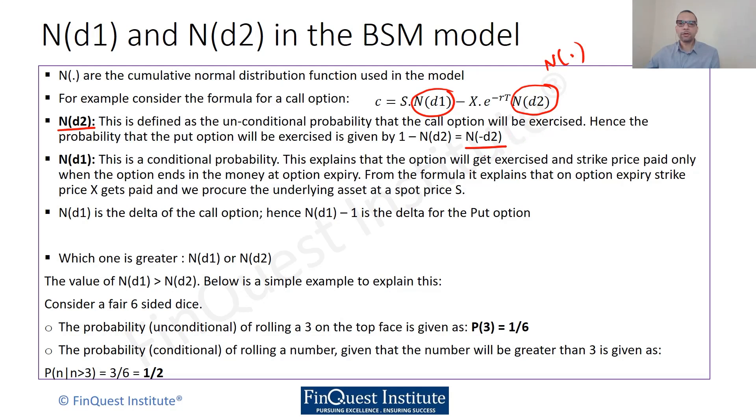For a put option, this will be given by N(-d2). This means that the probability that the put option will be exercised is N(-d2).